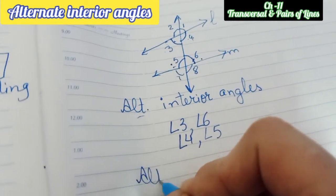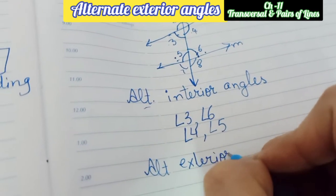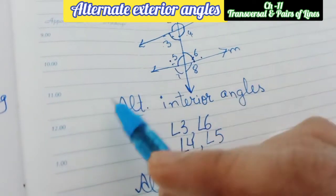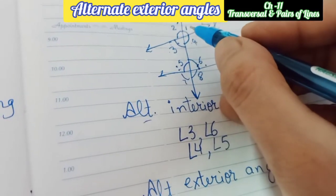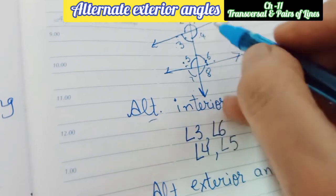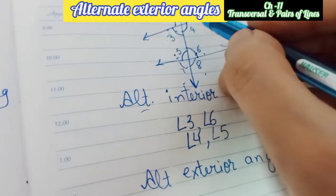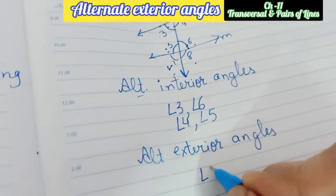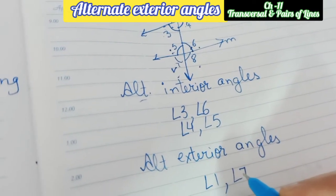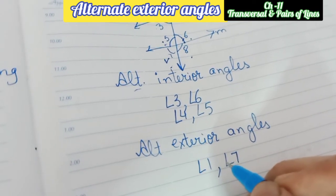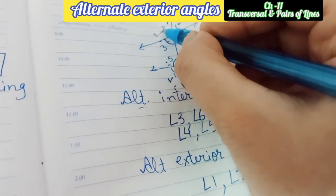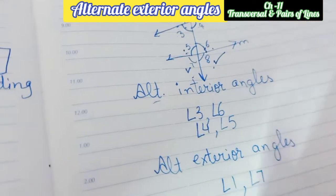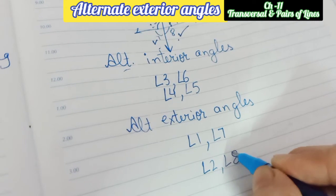Similarly, if we talk about alternate exterior angles, they must be exterior and alternate to each other. The exterior angles are one, two, seven, and eight. If we take angle one, then its alternate is angle seven, so one and seven are on opposite sides and are exterior angles — they are called alternate exterior angles. Similarly, angle two is also exterior, and on the opposite side the exterior angle is angle eight, so angle two and angle eight are alternate exterior angles.